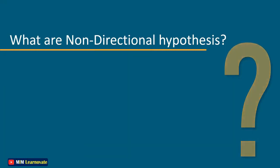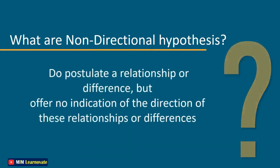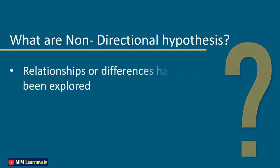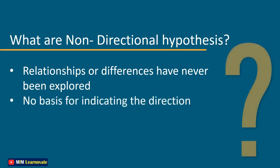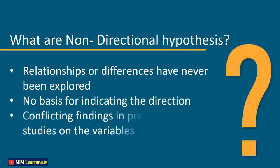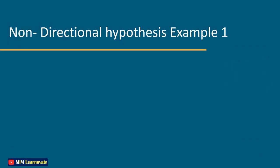What are non-directional hypotheses? Non-directional hypotheses are those that do indicate a relationship or difference but offer no indication of the direction of these relationships or differences. They are formulated either because the relationship or differences have never been explored and hence there is no basis for indicating the direction, or because there have been conflicting findings in previous research studies on the variables.